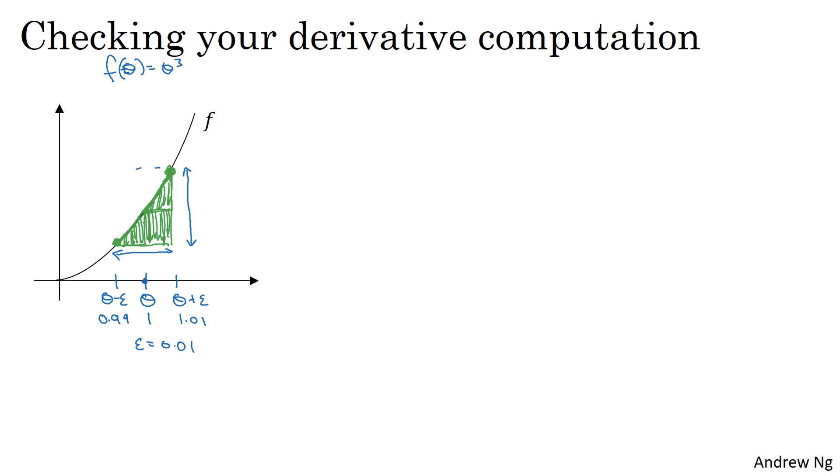So let's work on the math. This point here is f of theta plus epsilon. This point here is f of theta minus epsilon. So the height of this big green triangle is f of theta plus epsilon minus f of theta minus epsilon. And then the width—this is one epsilon, this is two epsilon—so the width of this green triangle is two epsilon. So the height over the width is going to be the height, so that's f of theta plus epsilon minus f of theta minus epsilon, divided by the width, so that was two epsilon, which we worked on down here. And this should hopefully be close to g of theta.